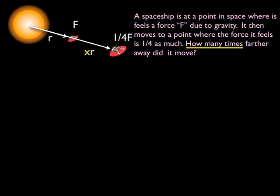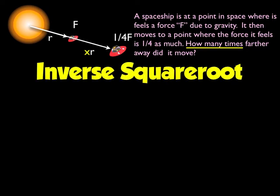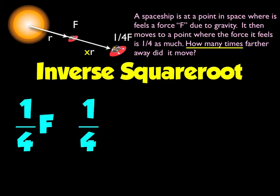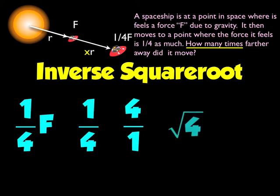To do this, instead of using the inverse square, I'm going to use the inverse square root. Whenever the factor of change you're given is in the intensity — in this case the force — instead of inverse square, I use inverse square root. My factor of change is one fourth. Following the inverse square root instructions: take the inverse of one fourth, which is four, then take the square root, and that gives me two.